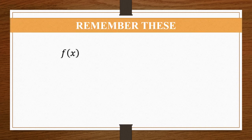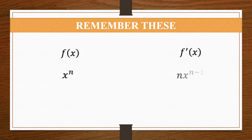Before we move forward, let us remember the last two proofs which we did. When f(x) is x raised to n, its differentiated value will be nx raised to n minus 1. The power n should be brought into the multiplication and then 1 should be deducted from the power. When f(x) is a constant value, its derivative will be 0. These two standards you have to remember, because it will be very useful for what we are going to do next.